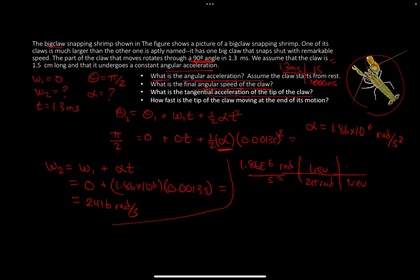They gave us r = 1.5 centimeters, which is 0.015 meters. When you do the math, you get 2790 meters per second squared.